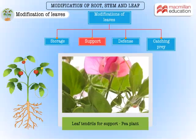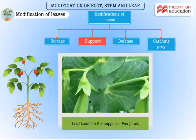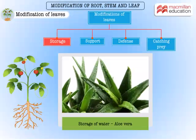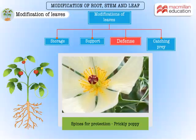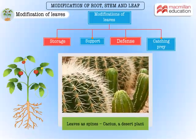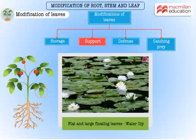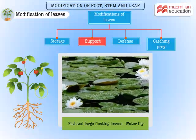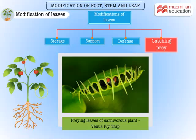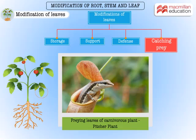In a pea plant, the leaflets are modified into leaf tendrils. These tendrils twine around other objects to support the plant. Aloe leaves are modified to store water. In prickly poppy, the leaves are modified into spines for defense against grazing. Cacti have spines that are actually leaves, modified to help reduce water loss in desert plants. Water lilies have flat and large leaves to help them float on water. The most unique modification is seen in carnivorous plants like the Venus flytrap and the pitcher plant, where the leaves are modified to trap and digest small animals.